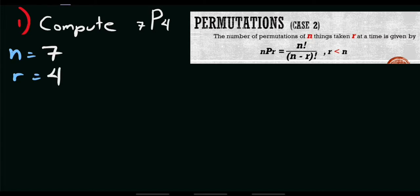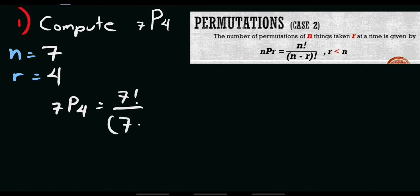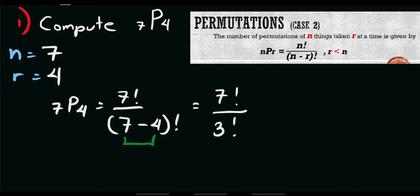After that, let's plug in all of the values of n and r to our formula. We have 7P4 equals n factorial — that's 7 factorial — all over n minus r factorial, which is 7 minus 4 factorial. Simplifying, 7 minus 4 gives us 3 factorial in the denominator.